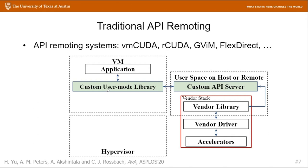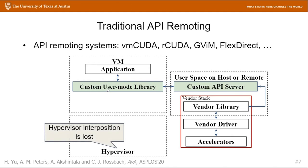The technique is called API remoting and is well explored. Here is the architecture of an API remoting system. The custom user-mode library communicates with the API server and forwards all application API calls to the API server. The API server executes those APIs and sends back results to the guest library. This design is straightforward, but it has two major problems. First, because the guest library communicates directly with the API server, there is no hypervisor interposition and we can't enforce resource policies by hypervisor. Second, we need to implement the guest library and API server per supported API, so API compatibility is poor.